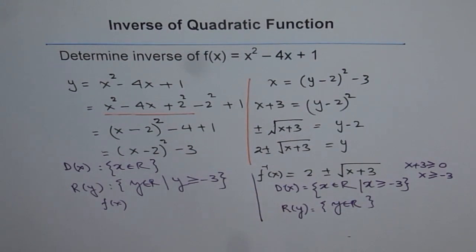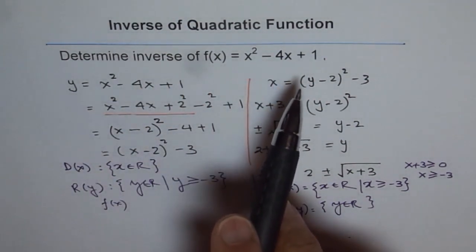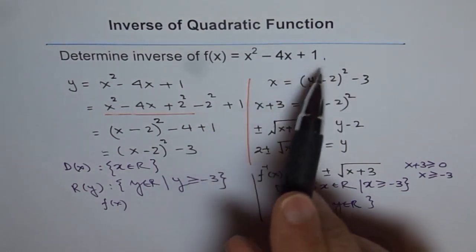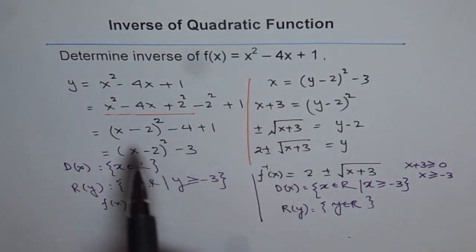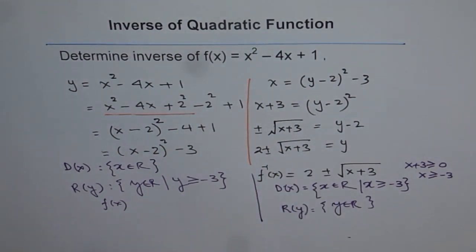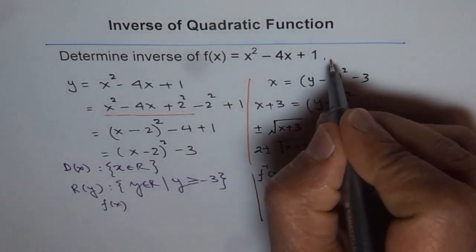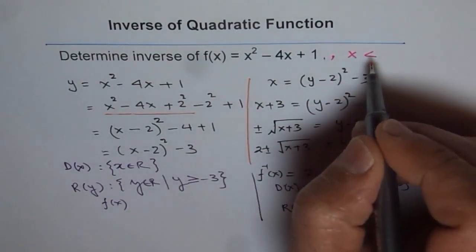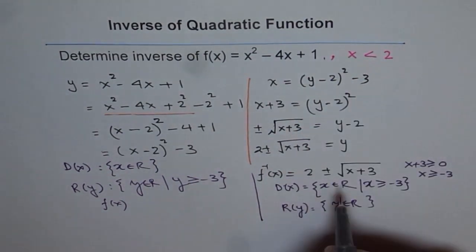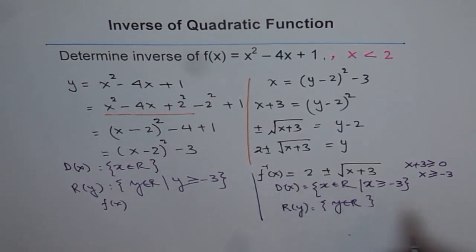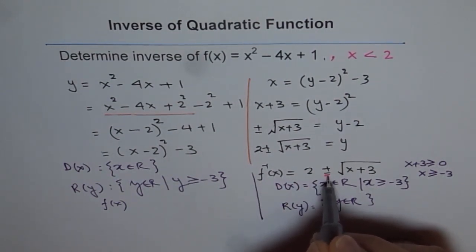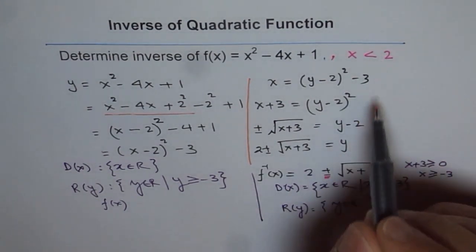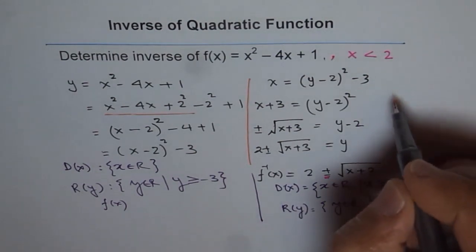At times, you may find questions where we may give restriction here itself that determine inverse of this function where x is greater than or less than 2. Now if we write x > 2, then when you do this inverse, you have to use plus sign. And if I change this question, if I change this question and I write where x is less than 2, then how will it change? It will change this inverse function that we will take only the minus value, not the plus one. Since we are interested in the negative half of our parabola.